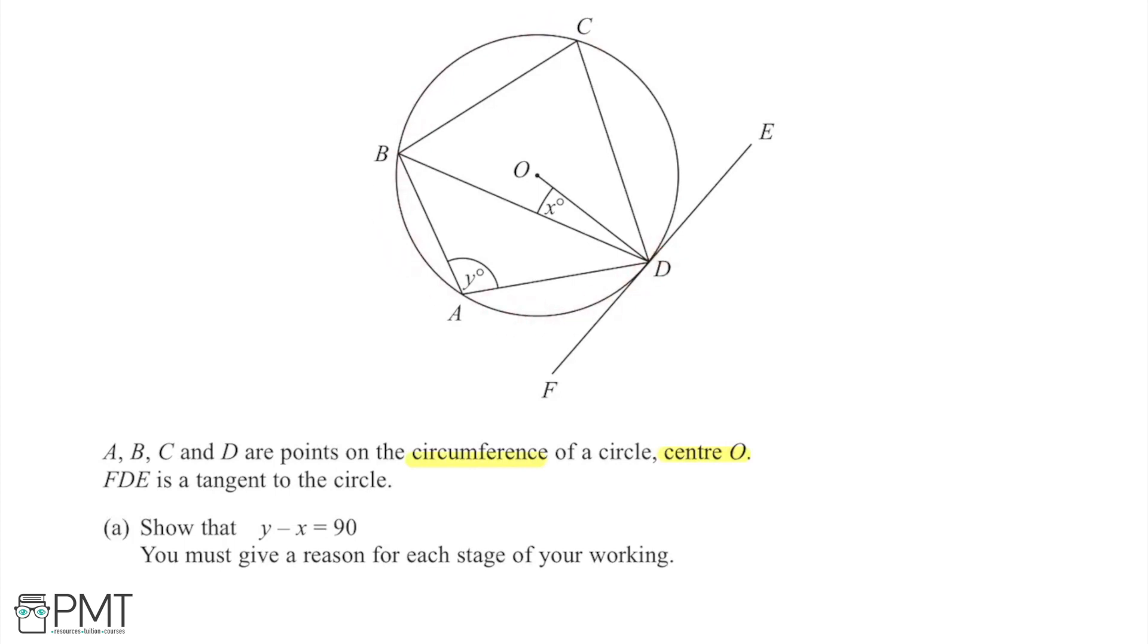We're told that FDE is a tangent to the circle so it meets the circle at one point, and that's at this point D. We're asked to show that y minus x is equal to 90 using this information and the diagram, and we're told that we must give a reason for each of our stages of working.